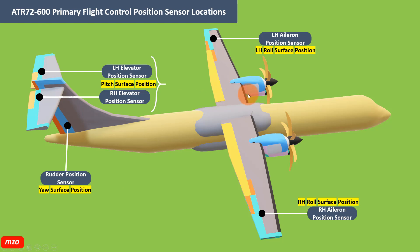This is the ADR-72. This one is the LH aileron position sensor and LH roll surface position, and this one is the RH aileron position sensor and RH roll surface position. This is the rudder position sensor and yaw surface position. These two are the LH elevator position sensor and the RH elevator position sensor for the pitch surface position. This is the primary flight control position sensor and its location.